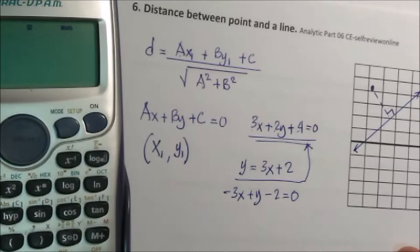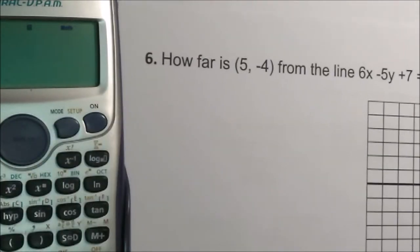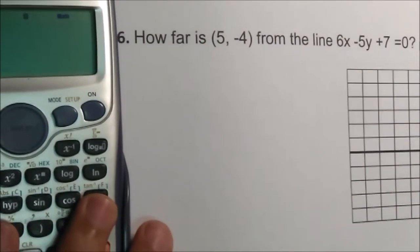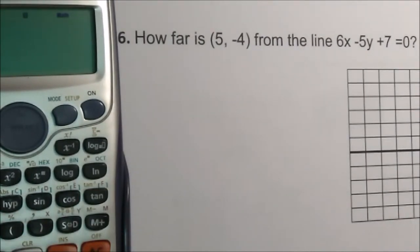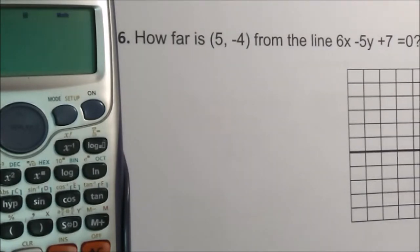We have an example here. How far is (5, -4) from the line 6x minus 5y plus 7 equals zero? The answer is 7.3. Let us check.